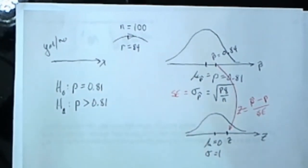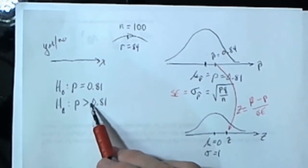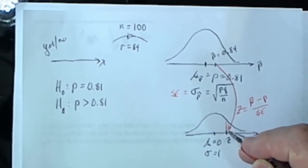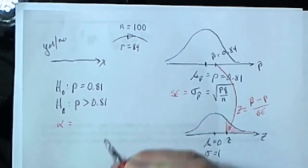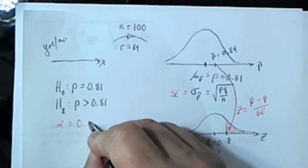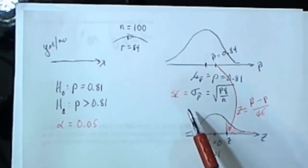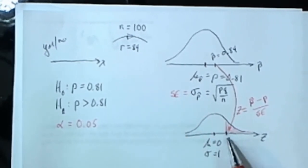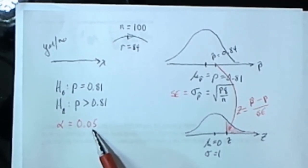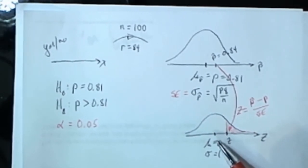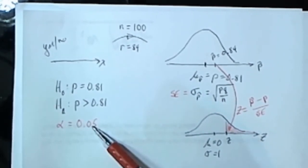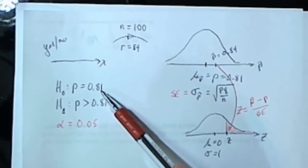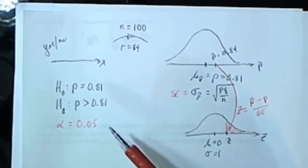But once that z value is found, then what we want to do because this is an upper tailed test, we want to find the probability of being that z value or something bigger. If that value is less than or equal to whatever alpha is, in our problem alpha was not stated. When that happens we'll just assume that the alpha is 5%. So if we were completing this entire hypothesis test, then we would want to find that area and look to see if that area is greater than alpha, in which case we would fail to reject the null hypothesis, because this phenomenon would not be unusual. On the other hand if that area is less than whatever alpha is, 5% in our case, then we would reject the null hypothesis. And therefore the sample is supporting the alternative hypothesis.